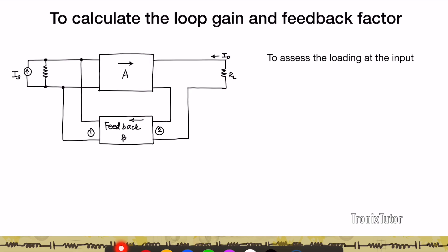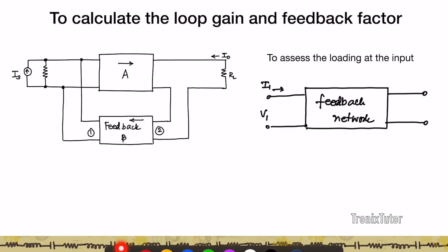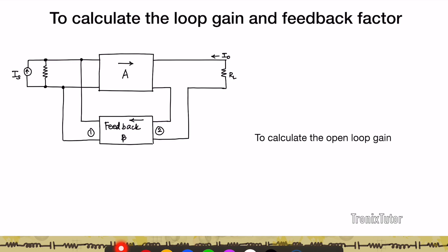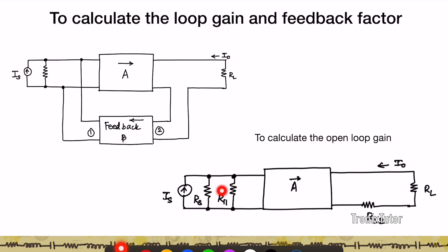To calculate the loading at the input of the open-loop amplifier from the output of the feedback network: since the output is a current and the input signal is a current, open-circuit the input signal, apply an output voltage, and measure the output current. Hence R11 is given by V1 divided by I1 when the input to the feedback network is zero. Since this is shunt-series feedback, R11 appears as a shunt resistance at the input and R22 appears as a series resistance at the output. The equivalent circuit consists of the open-loop gain A, with R11 in parallel with Rs and R22 in series with RL. Solving this circuit gives I0 divided by Is, which is the open-loop gain.